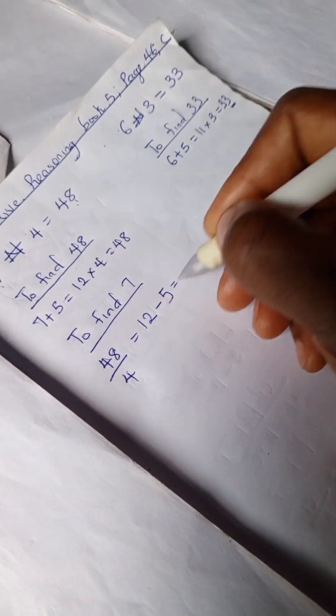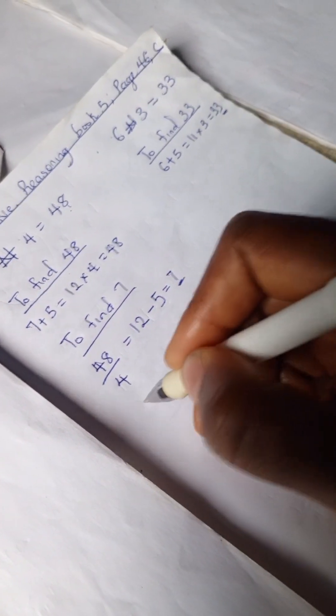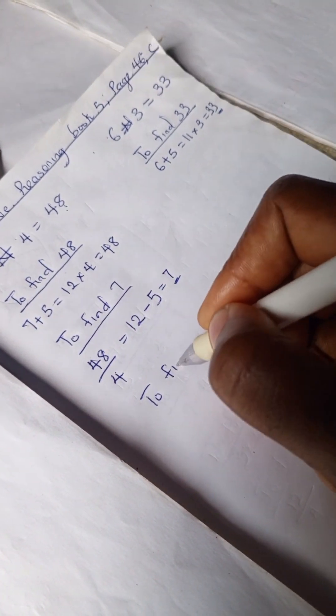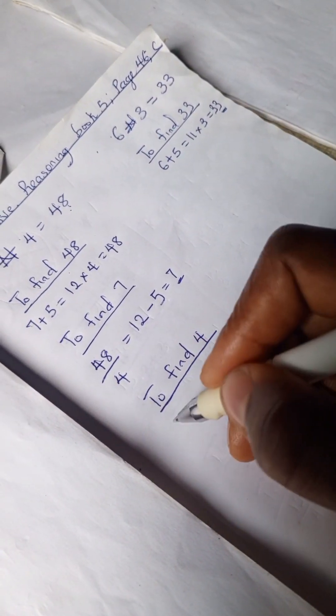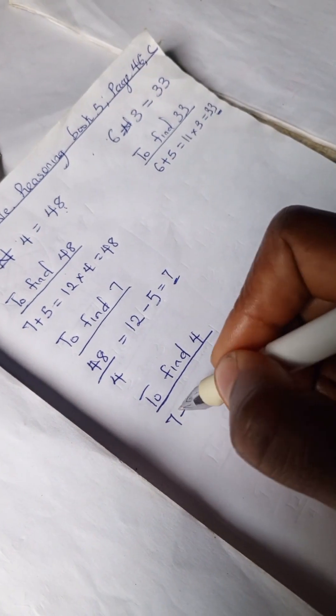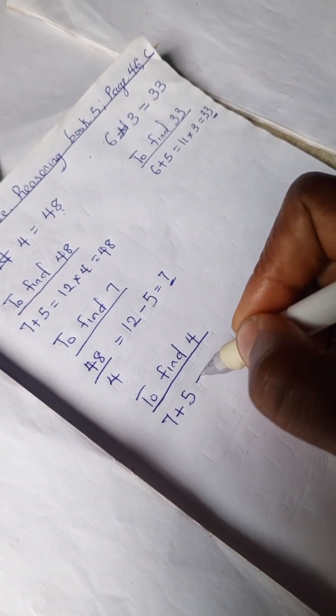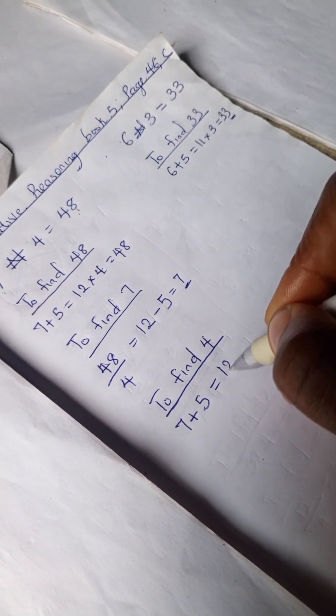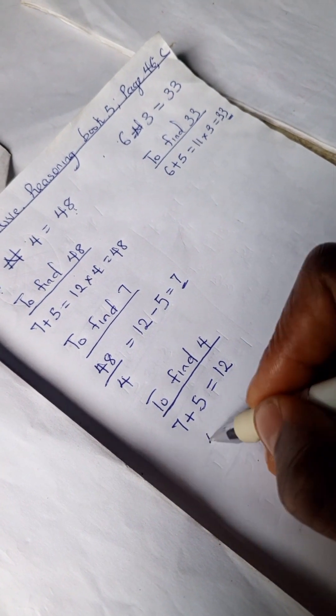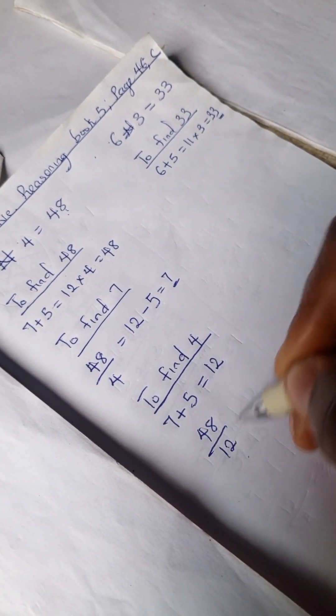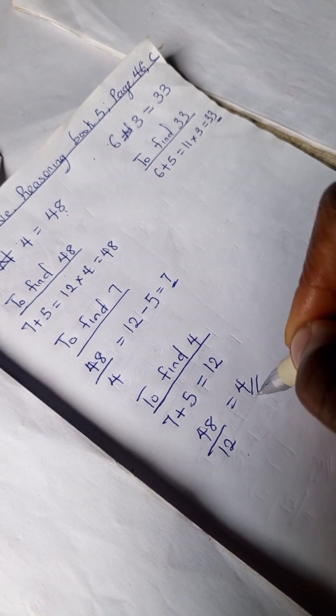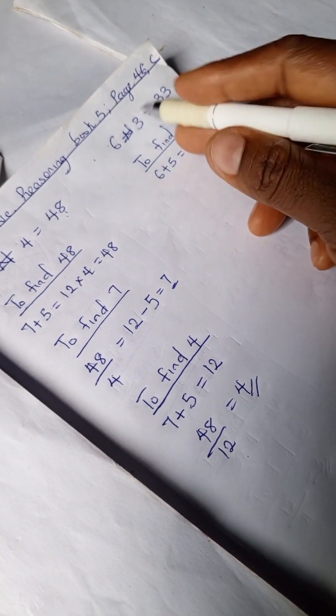To find 4, we have 7 + 5 (the secret number) = 12, and 48 ÷ 12 = 4. Let's do the same thing here to find 6.